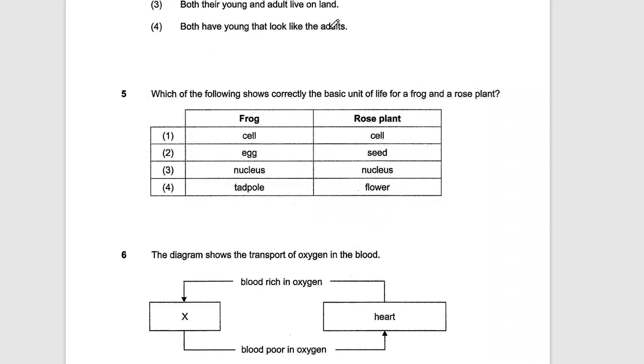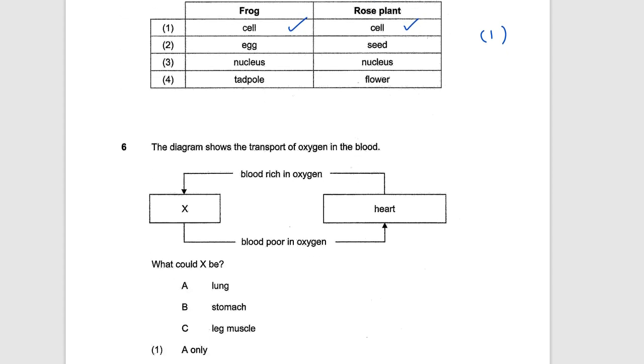Which of the following shows correctly the basic unit of life for frog and a rose plant? For all forms of life, the cell is the basic unit of life. Seed is for dispersal, egg, and anything which is an egg or pre-fertilization does not include the basic unit itself. It's just components that make up the first unit, which is the cell. Next question number six.